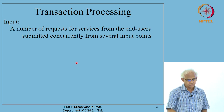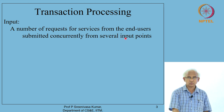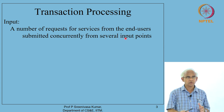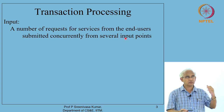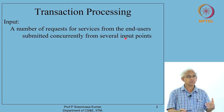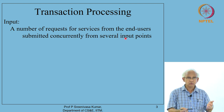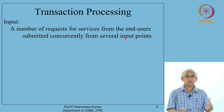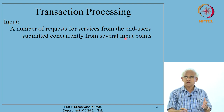For the transaction processing system, there are a number of concurrent requests for services. These are application programs developed by application programmers and made available so that they can be invoked as part of a transaction. When you develop a library system, for example, you would have developed a program that can issue a book for an end user. It takes in the credentials of the end user, verifies that the person is eligible to take a book, then modifies the database to reflect that the book has been issued to that particular person.